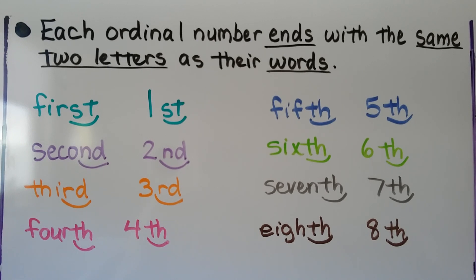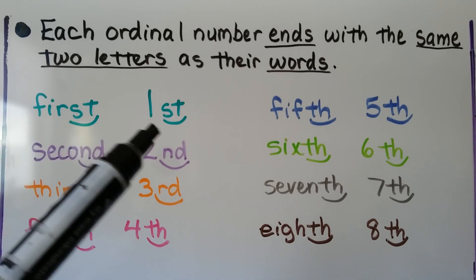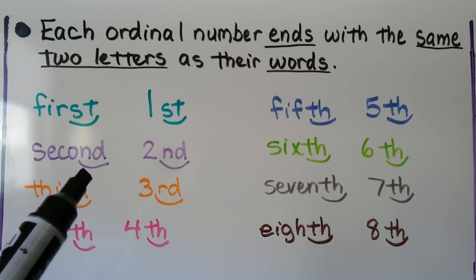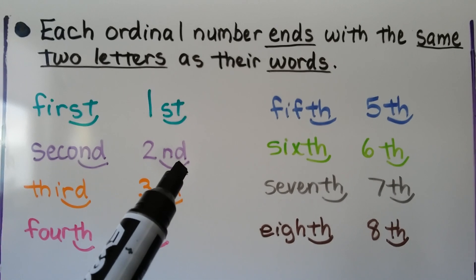Each ordinal number ends with the same two letters as their words. We have first, which ends with an ST. We write a 1 with an ST. Second ends with an ND. We write a 2 with an ND.